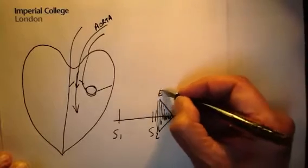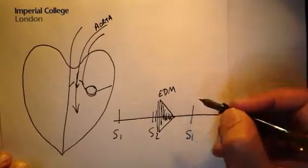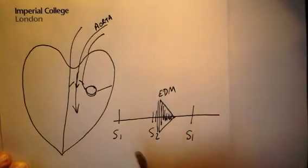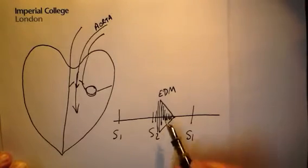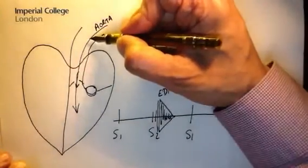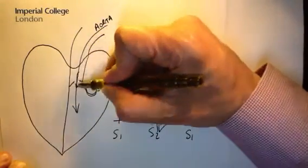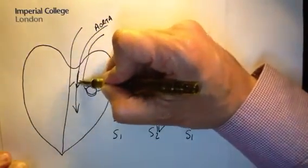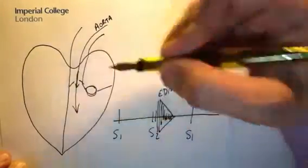So it's an early diastolic murmur, and you hear lub-phew, lub-phew, lub-phew. And that's because at the beginning of diastole there's a very high pressure in the aorta, and therefore there's a loud sound as blood gushes backwards through this leaky aortic valve.